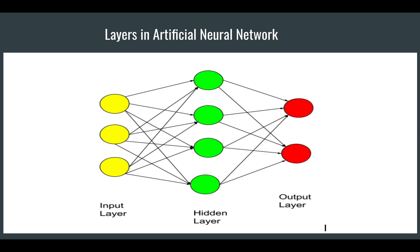Today's topic is about the layers in the Artificial Neural Network (ANN) — how many layers there are. ANN is basically defined by its layers in deep learning. When you start writing the coding part, you have to define the input layer, the hidden layer, and the output layer. There are always three layers in deep learning or ANN.